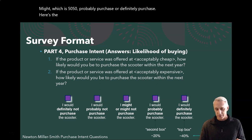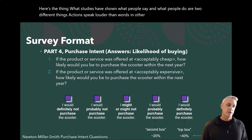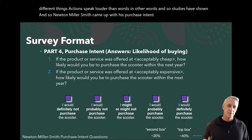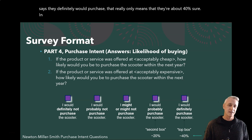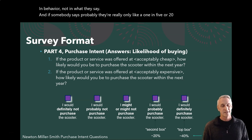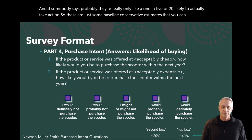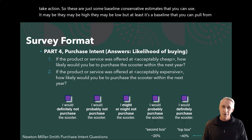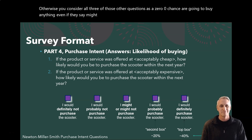Here's what studies have shown: what people say and what people do are two different things — actions speak louder than words. Newton Miller Smith came up with purchase intent calibration: if somebody says they definitely would purchase, that really only means they're about 40% likely in actual behavior. And if somebody says probably, they're really only about one in five — 20% — likely to actually take action. These are baseline conservative estimates. The other three responses — might, probably not, definitely not — you consider as zero percent chance they're going to buy anything.